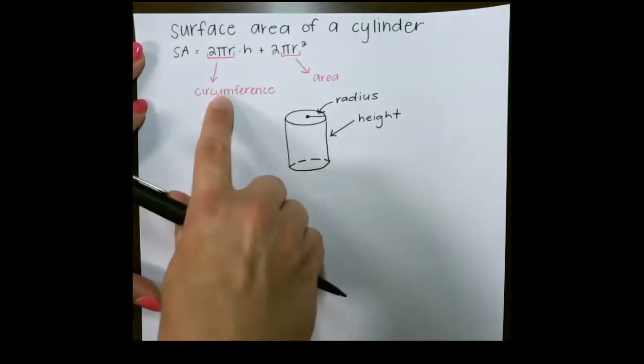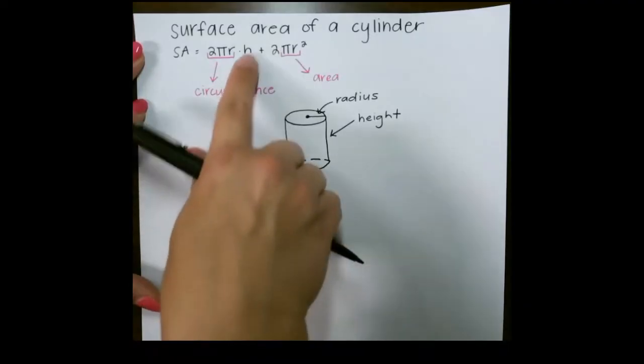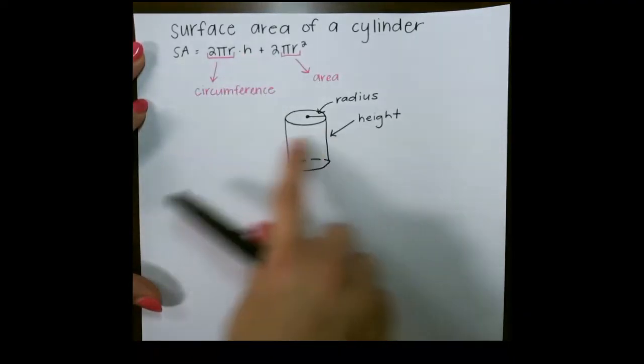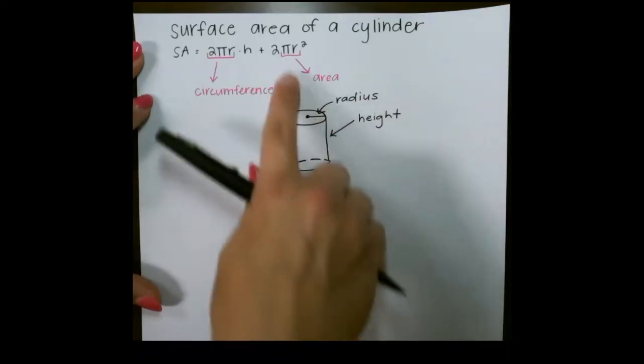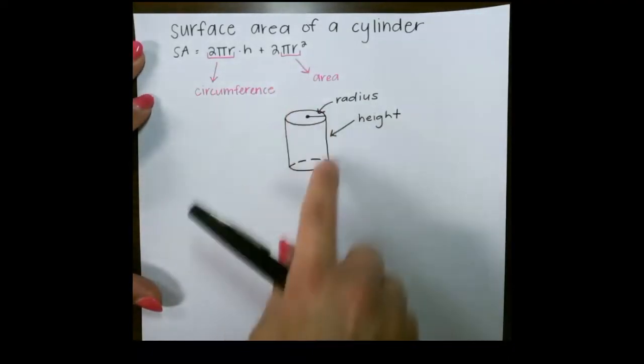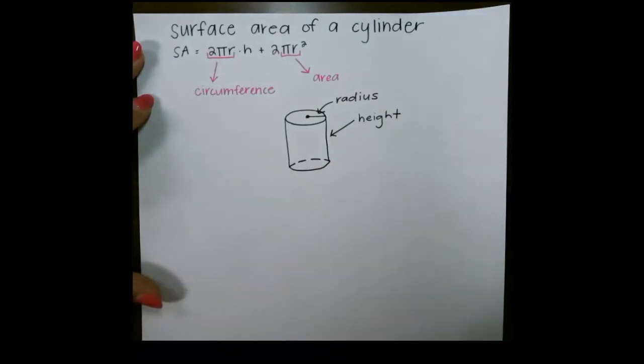Remember that 2 pi r is the circumference, so when we multiply the circumference times the height, we are finding the middle of our cylinder, which is a rectangle when it is unfolded. 2 pi r squared, because we are finding the area of both of the circles on our shape.